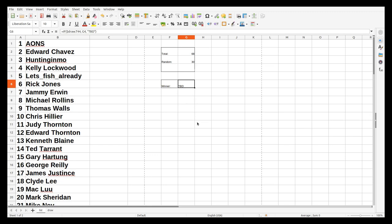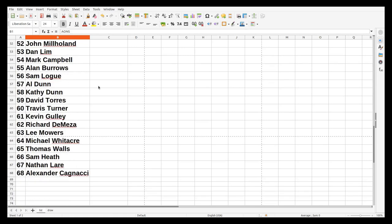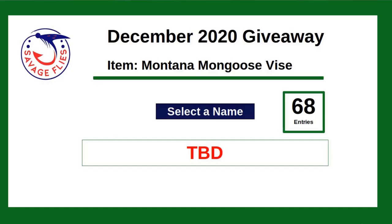All right, everybody. I'm about to do the drawing for the Montana Mongoose Vise giveaway. We've got 68 entries this time. I will scroll through these quickly. Take a look. You can see, indeed, we have 68 entries. Now I just go to the draw screen. I have to hit one button and it will output a winner.